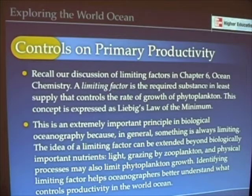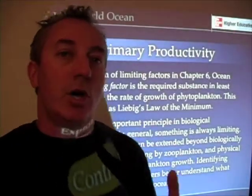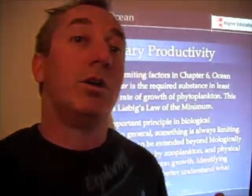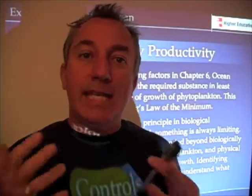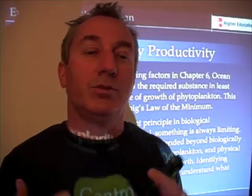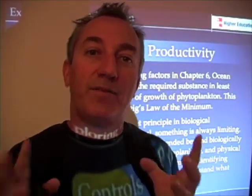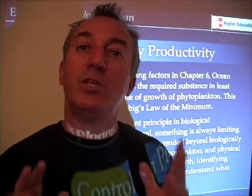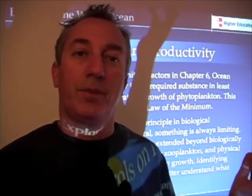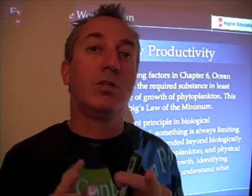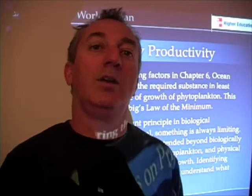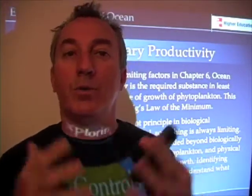We talked about limiting factors in Chapter 6, briefly discussing Liebig's Law of the Minimum. That concept, which actually comes from agriculture, says that the required factor — whether it's light, fertilizers, or some other substance — that is in the least supply is the one that's going to limit growth. This is a very useful principle, because now we only need to focus on one thing controlling the growth or photosynthetic rate of a particular organism or phytoplankton.